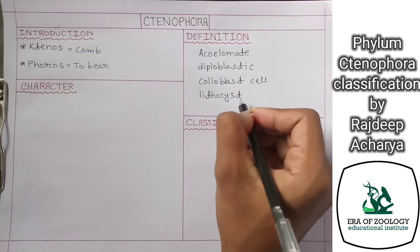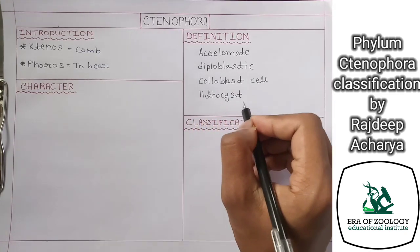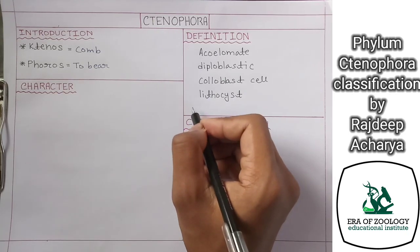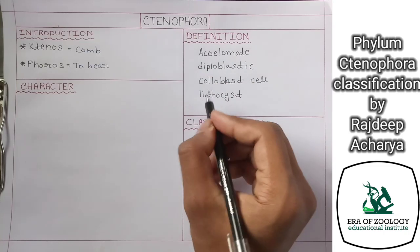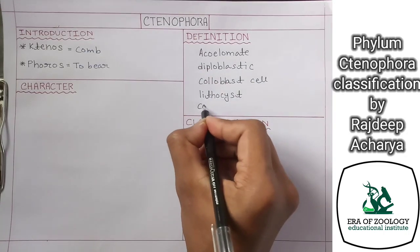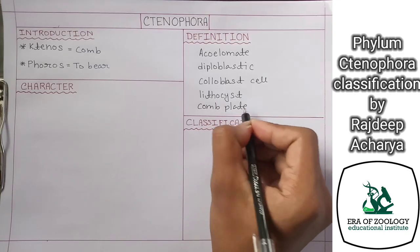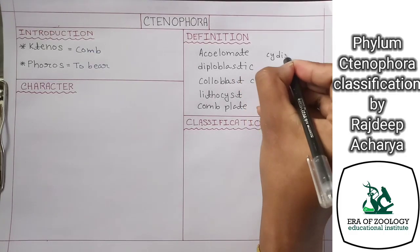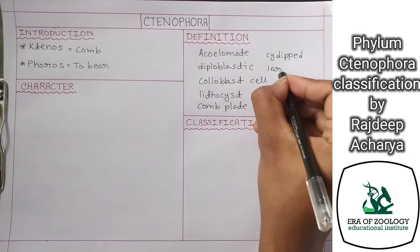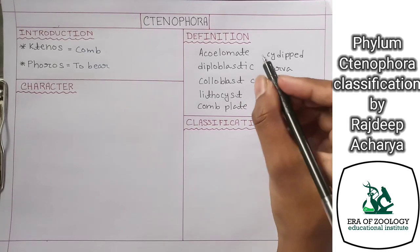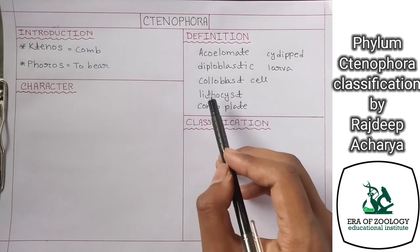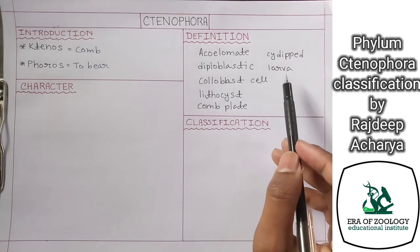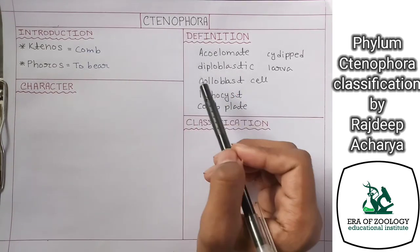The fourth thing is a phylum should have lithocyst, which acts as a sense organ. The fifth thing is the phylum should have comb plates, which is actually the main characteristic feature of Ctenophora. A phylum should be developed from cydippid larvae. So a phylum which includes acoelomate, diploblastic, colloblast cell, lithocyst, comb plate, and developed from cydippid larvae is defined as Ctenophora.